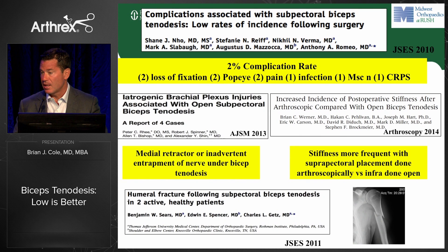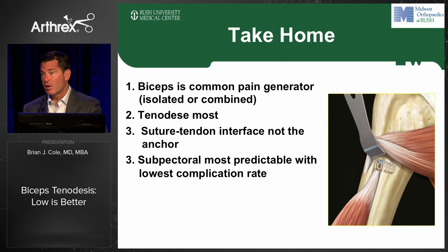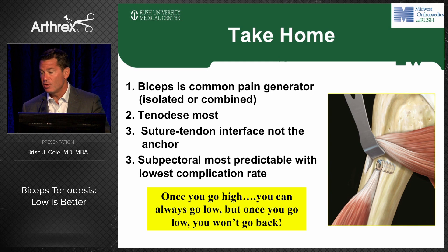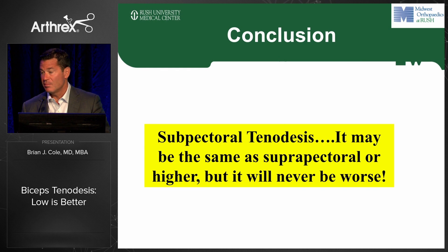Take-home points: the biceps is a common pain generator — you can see it in isolation, but most commonly I see it combined with other pathology. Tenodesis is the answer for most patients; I have a hard time justifying tenotomy except for a specific patient group. The suture-tendon interface is the critical issue, and not all anchors support large-gauge sutures and tapes. Sub-pectoral is the most predictable approach and has clearly been shown to have the lowest complication rate. Once you go high, you can always go lower — but no one goes back up after a sub-pectoral tenodesis. Sub-pectoral may be the same as supra-pectoral at best, but it's never going to be worse — so I'm not sure why you would do anything other than sub-pectoral tenodesis.